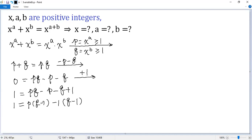Next, we can take the new common factor q minus 1 out. So we get 1 equals (q minus 1) times (p minus 1).